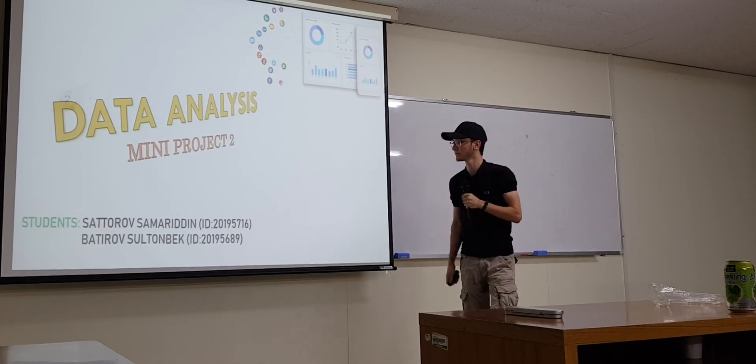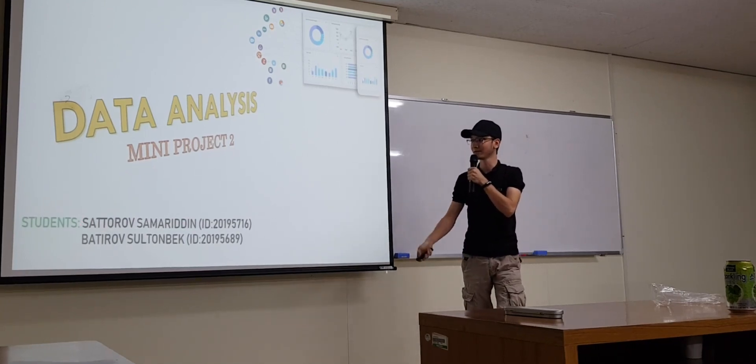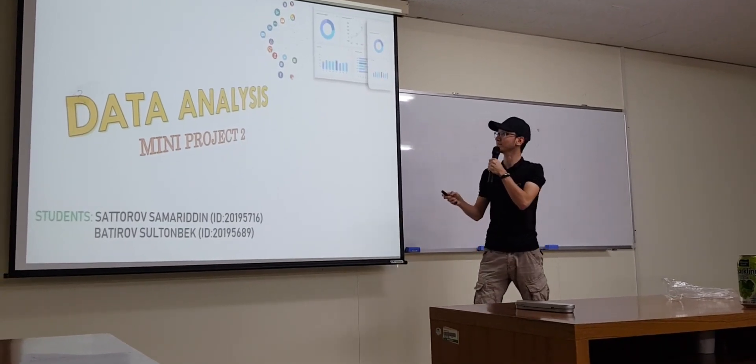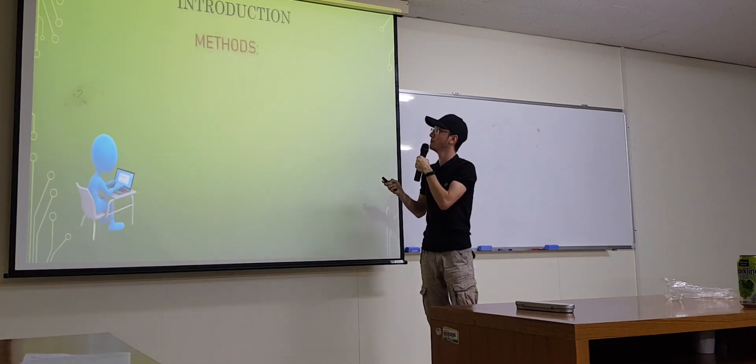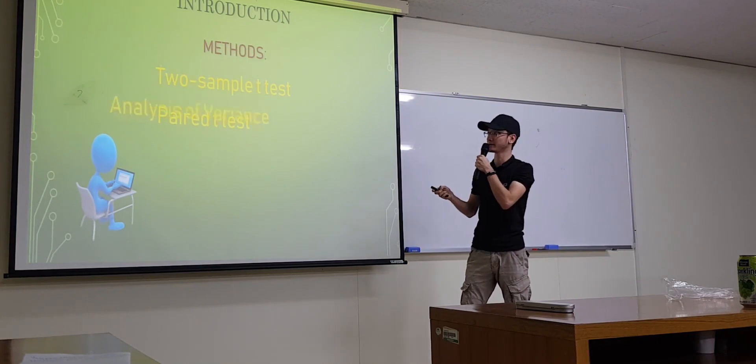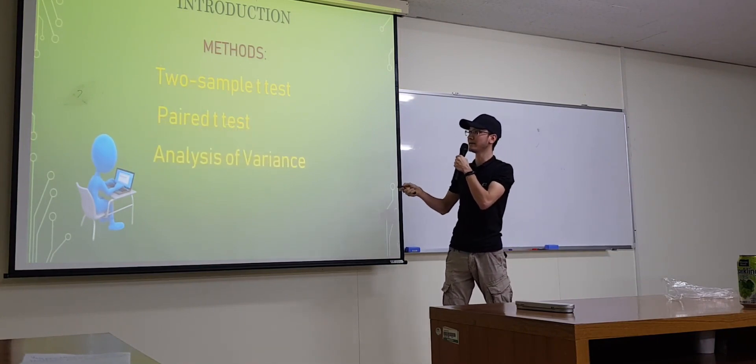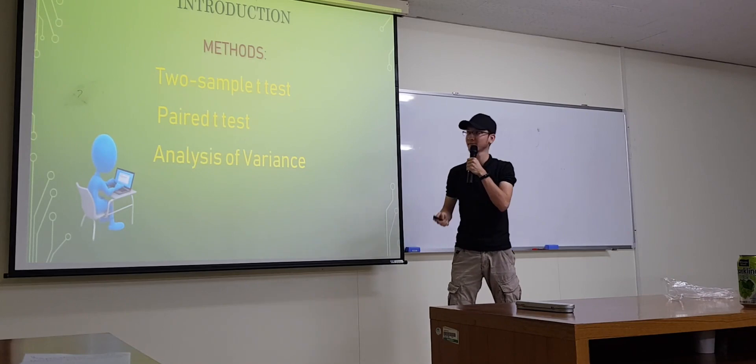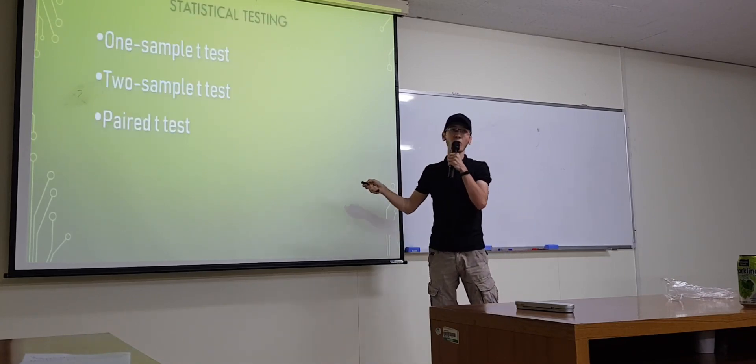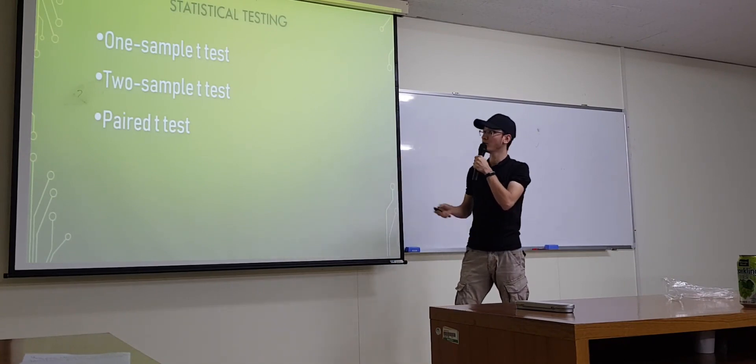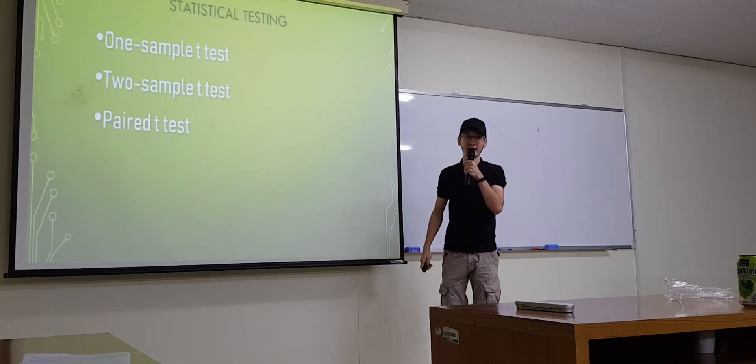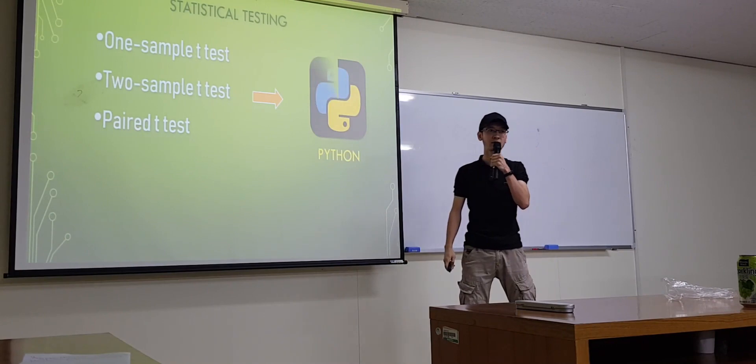Let me present. So team leader is Sato Samaritan and we have two other members but James Soltombe. So introduction, methods. Actually we have three methods: two sample t-test, paired t-test and analysis of variance. They are all included in statistical testing. We took all of them and we were able to create the software for them by using Python programming language.